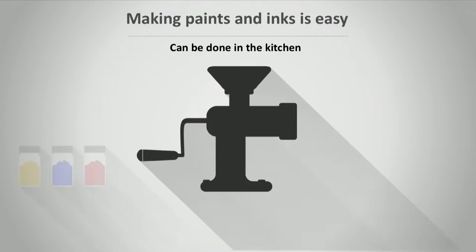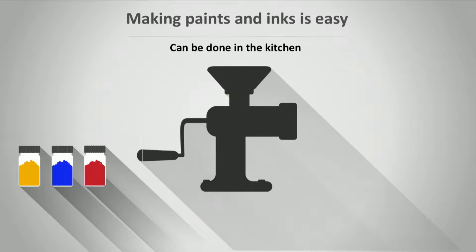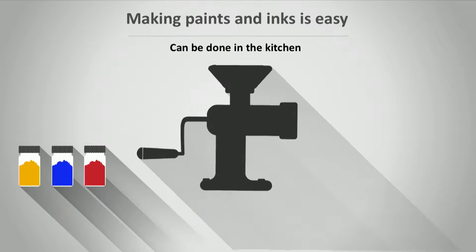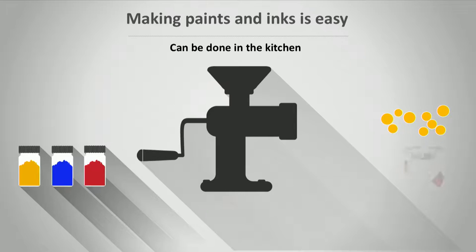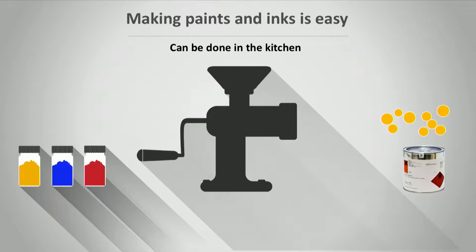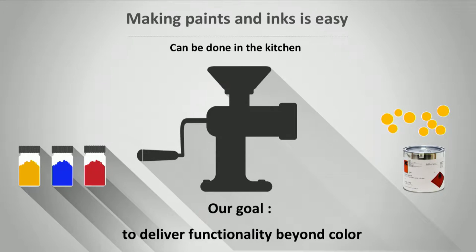Ink is really very simple to make. All you need to do is take pigments or material that will become a pigment — it can be a tomato, mud, or ashes. You simply mix it in a food processor-like instrument, shake it, and you end up with particles dispersed in a liquid, which is a paint. What we are interested in is not simply generating blue, yellow, or red colors — we are interested in making functional paints and functional inks. The meaning is that we deliver a function beyond color.